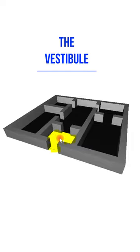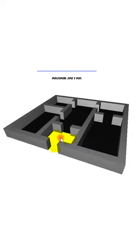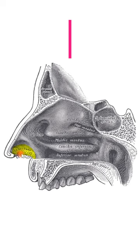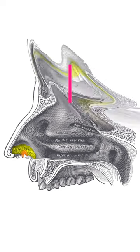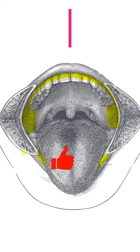A vestibule is a passage or hall between the outer door and the interior of a building. In the human body, the nasal vestibule is the small dilated space at the entrance of the nose that is lined by skin and contains hair follicles. In the mouth,